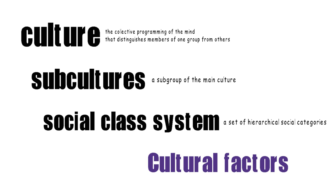The social class system refers to an ordered division in a society where people are grouped into a set of hierarchical social categories, the most common being the upper, middle, and lower classes. Social class is measured as a combination of various factors such as income, occupation, education, authority, property, lifestyles, and consumption.